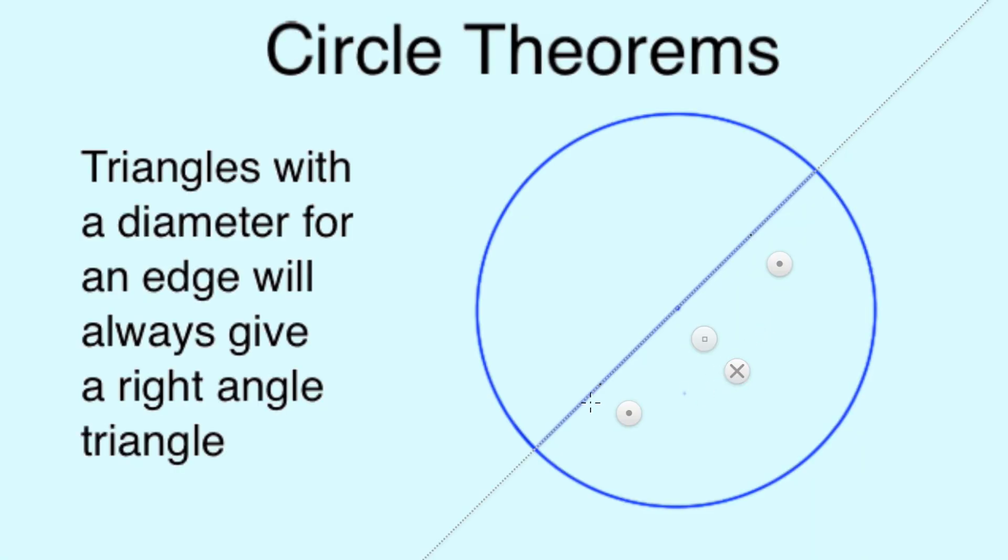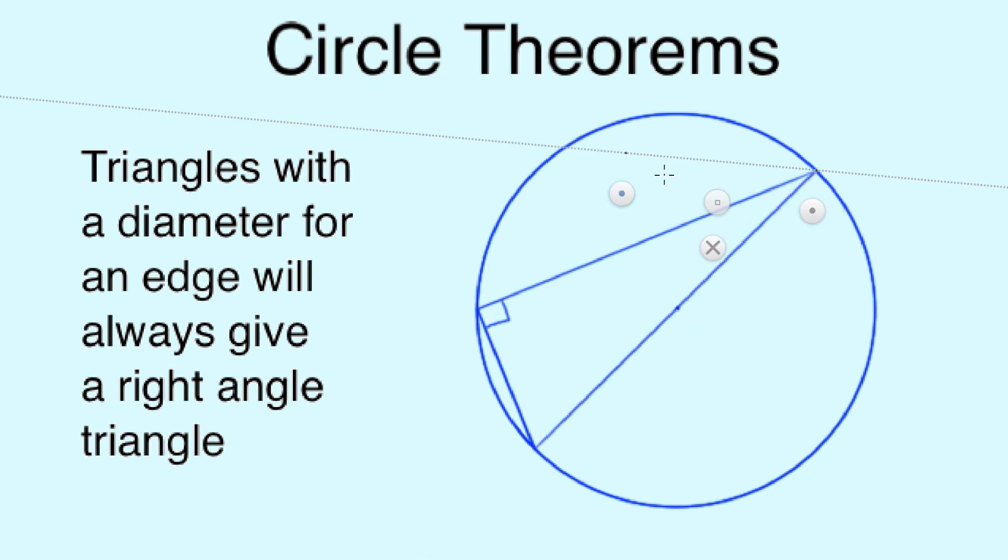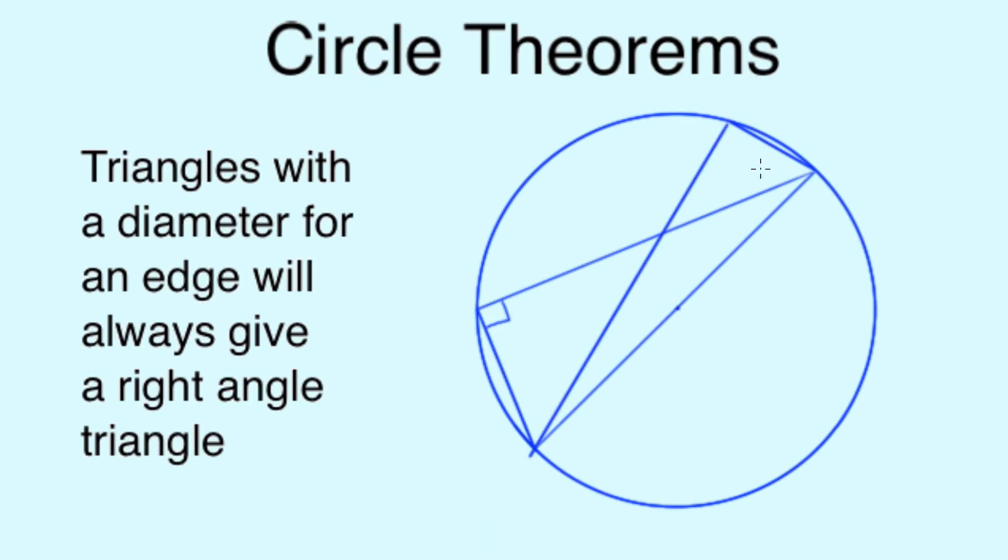The first concept to remember, if you see a triangle with one side as the diameter, that's the line cutting the circle in half at any angle, then the angle opposite will always be 90 degrees. Take a look at the example here. Our line making our triangle cuts the circle in half through the center, and we can see that the other two sides that touch the circle make a 90 degree angle. This will always be the case.